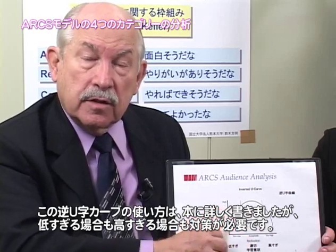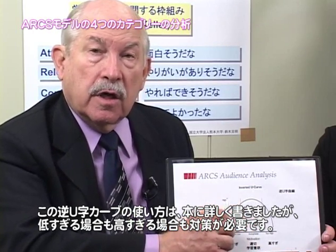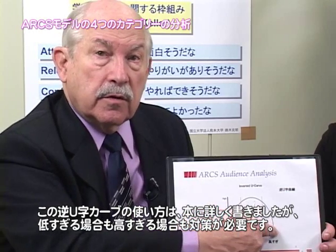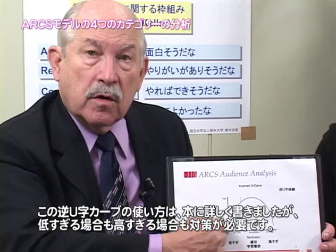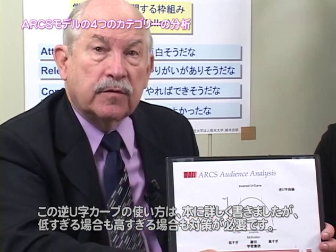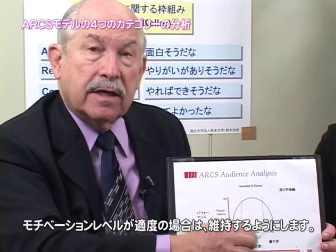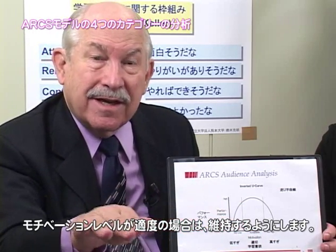In the book, I give a detailed explanation for how to utilize this inverted U-curve, as we call it, to determine whether the motivation level of your learners is too low, too high, or just right. And if it's too low or too high, you have to use enhancement strategies to improve it. If the motivation level is okay, then you use sustaining strategies to maintain the motivation.